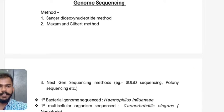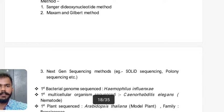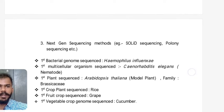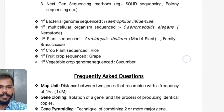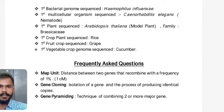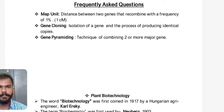The first topic is genome sequencing. There are three methods used for genome sequencing. The first two — Sanger dideoxynucleotide method and Maxim Gilbert method — are called first-generation DNA sequencing methods. Next-gen sequencing methods like SOLiD sequencing and polony sequencing are recent ones giving high-throughput results. The first bacterial genome sequenced was Haemophilus influenzae. The first multi-cellular organism sequenced was Caenorhabditis elegans, a model nematode. The first plant sequenced is Arabidopsis thaliana (family Brassicaceae), the first crop plant is rice, the first fruit crop is grape, and the first vegetable crop genome sequenced is cucumber.